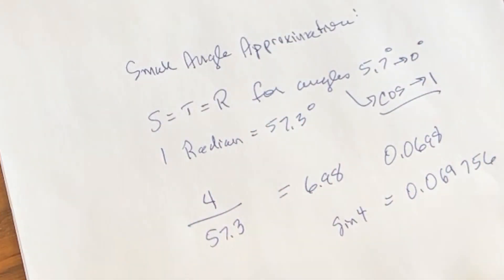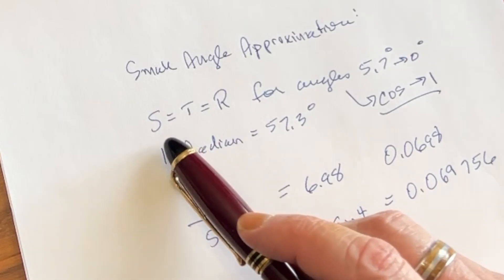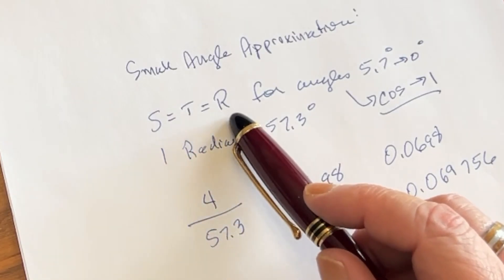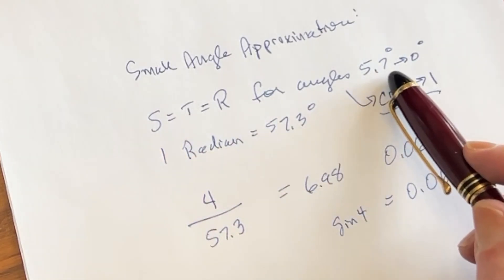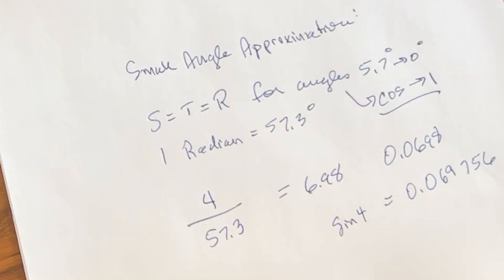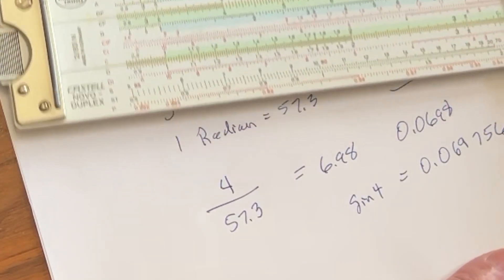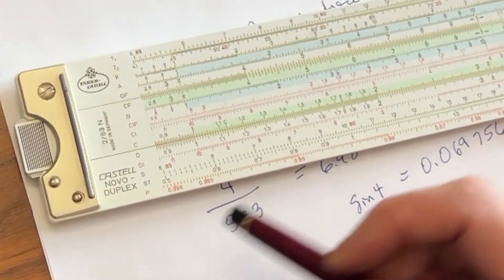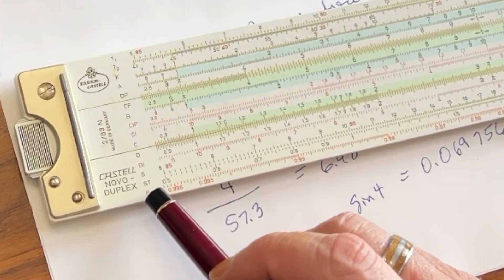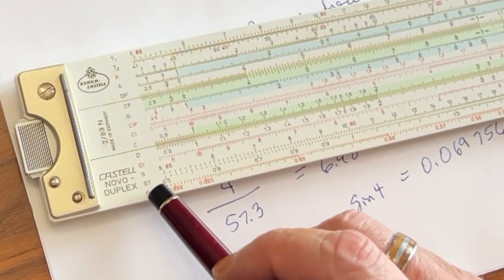Now while it's very important to understand this relationship that the sine, the tangent, and the radians equal each other for small angles, we actually have a scale on the slide rule that handles that. And that is called the ST or the SRT scale. So this is the small angle sine tangent scale or the sine radian tangent scale.